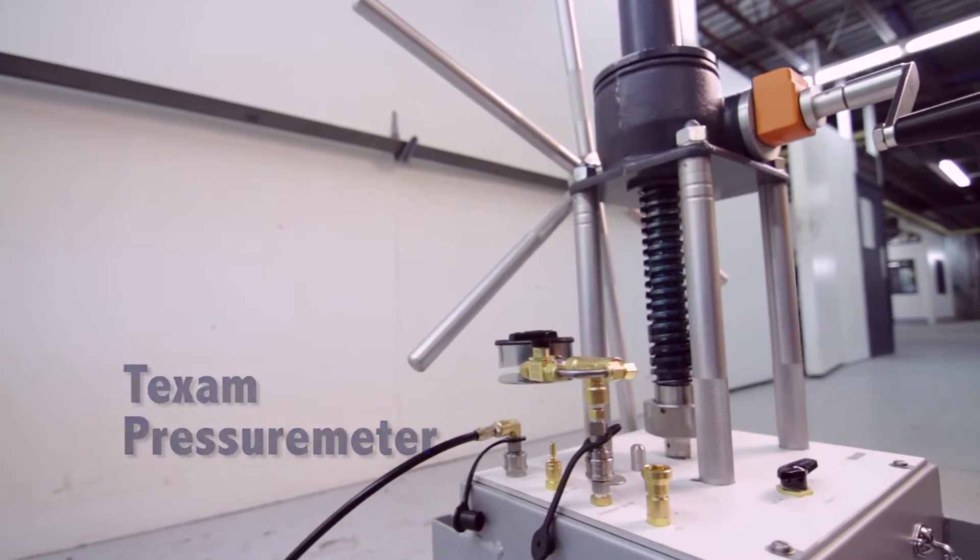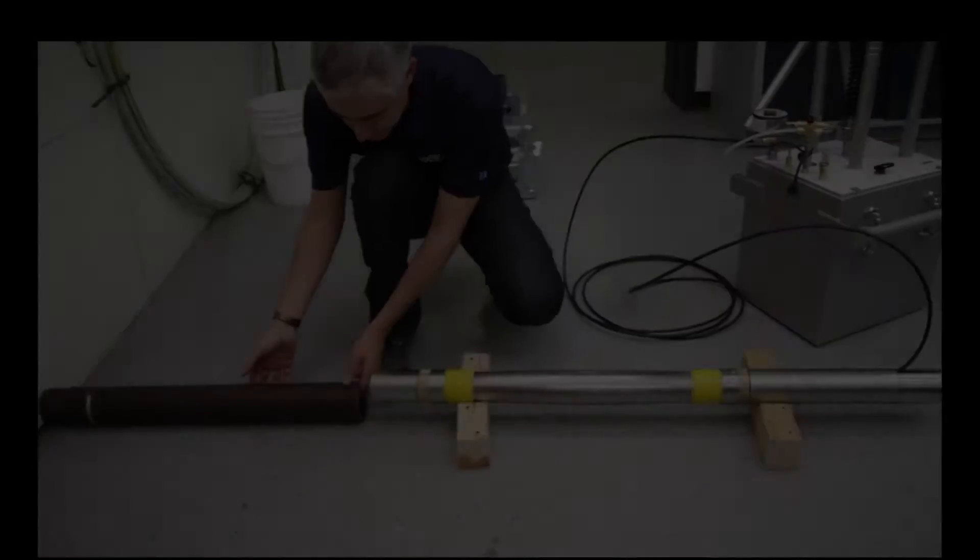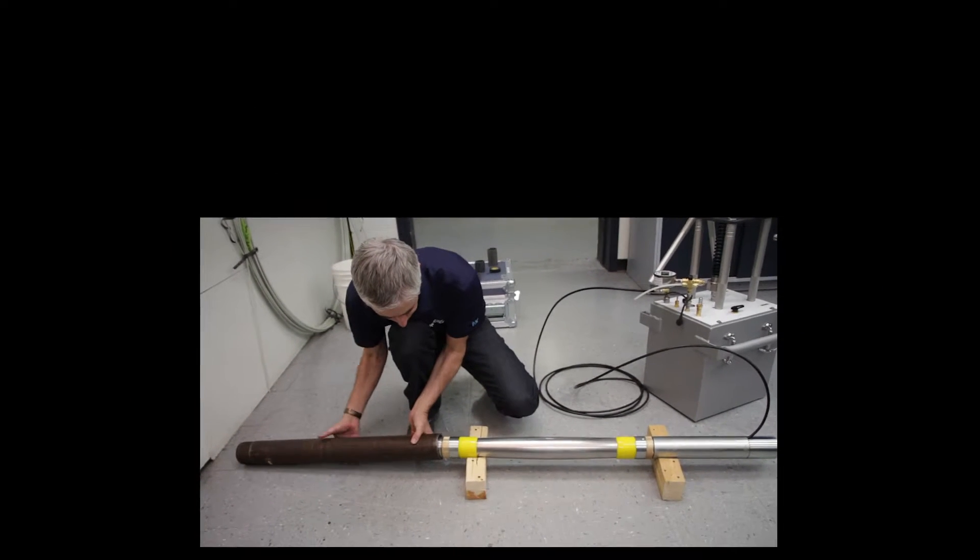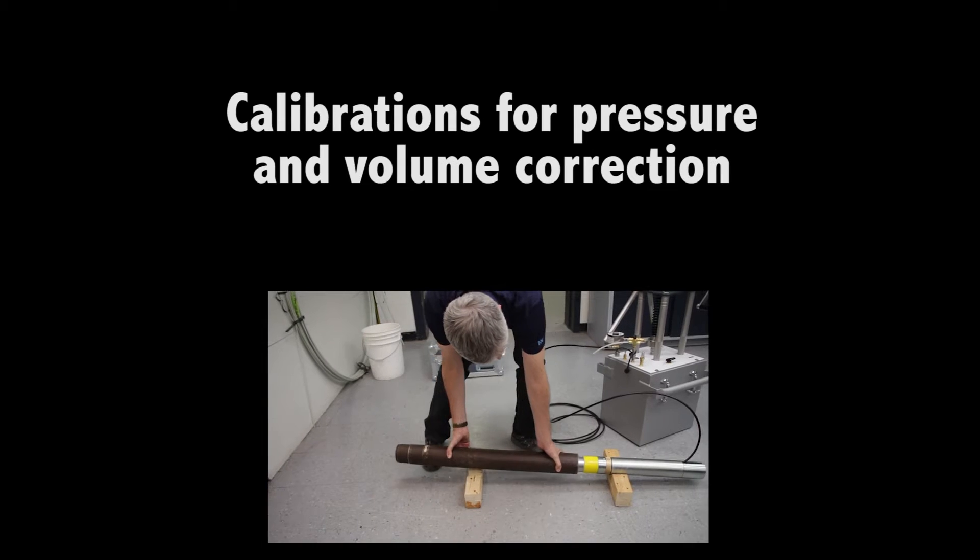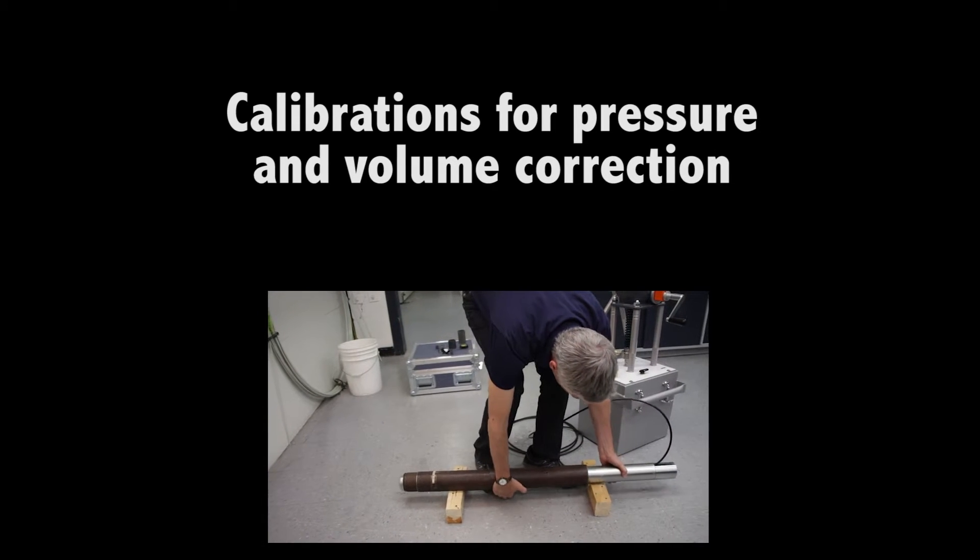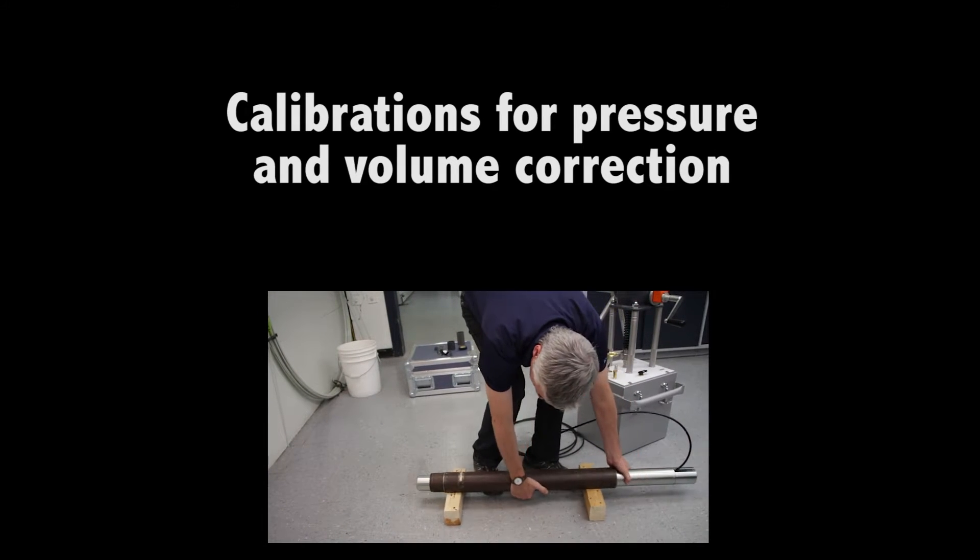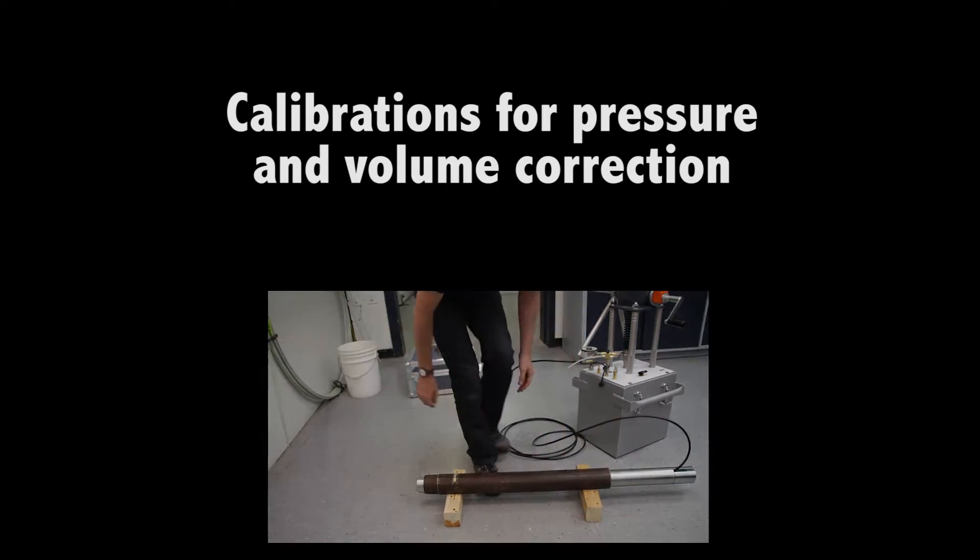We are ready for the calibration for pressure correction. This needs to be done each time a new sheath is put on the probe because it allows to measure sheath resistance. The range is typically from 30 to 100 kPa at 1600 cc for an end size probe.